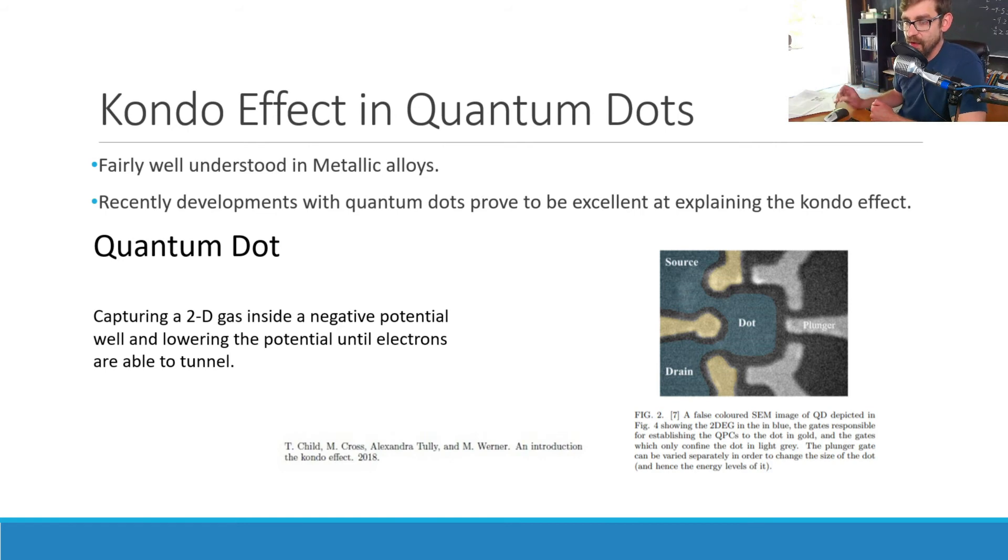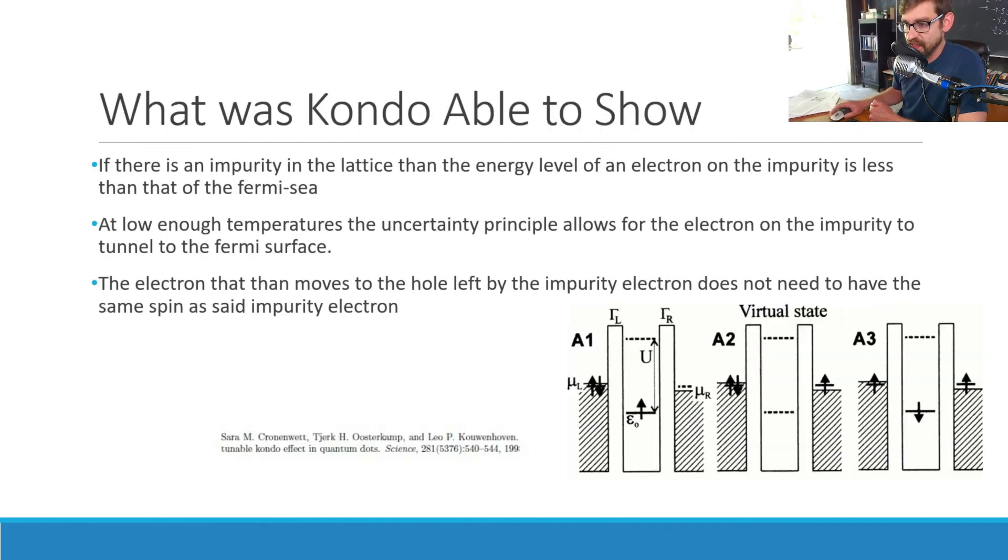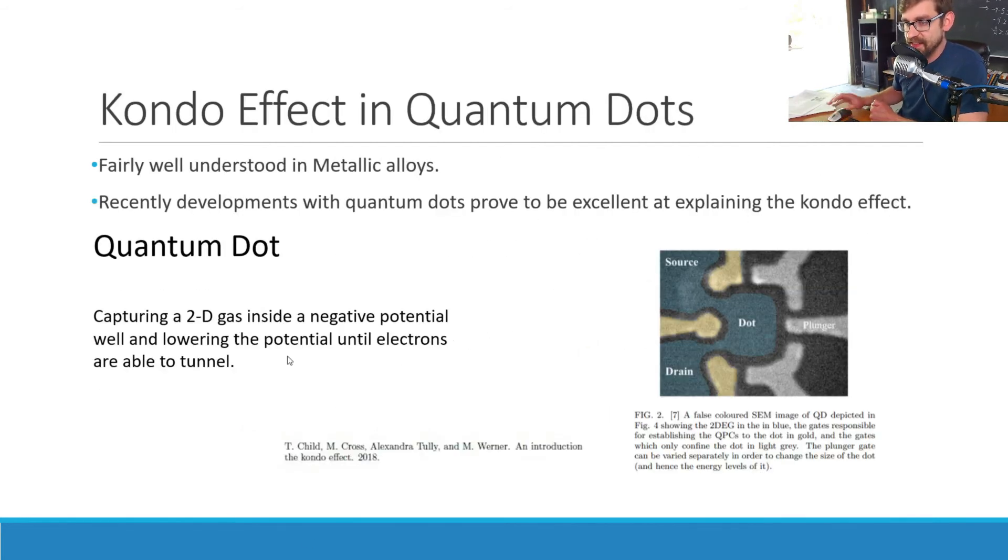So it was well understood in metallic alloys. But now in 1998, with the technology that has become more prominent is quantum dots. Now, a quantum dot is done by capturing a two-dimensional gas inside of a negative potential well. And the way that we use it for the Kondo effect is you can actually lower that potential well until it's low enough that the electrons are able to tunnel. So again, you'll have a situation like this where you'll have the electrons isolated in the quantum dot and then you lower the potential well enough such that this electron can make the tunnel through this potential barrier. And the nice thing about this is that these are very controlled experiments, right? Like you can control the electrons inside that two-dimensional gas by changing the way that the electric field, magnetic fields, runs over it. You can adjust the spins of the electrons. You can control all of the parameters that went into these quantum dots, which makes the precision of these quantum tunneling effects very, very particular and very accurate.